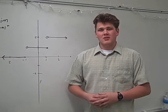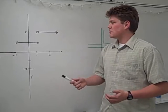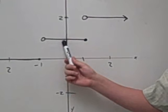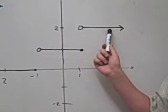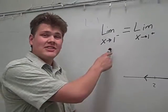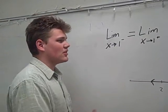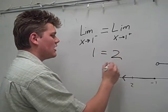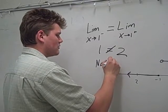Now not in every case will the limit from the left and the right-hand side be the same at a certain point. For example, on this step function at the point x equals 1, from the left-hand side the left-hand limit wants to equal 1. However, from the right-hand side it wants to equal 2. Now remembering our definition of a limit, the left-hand and the right-hand side must equal the same. Since these are not the same, there is no limit at the point x equals 1.